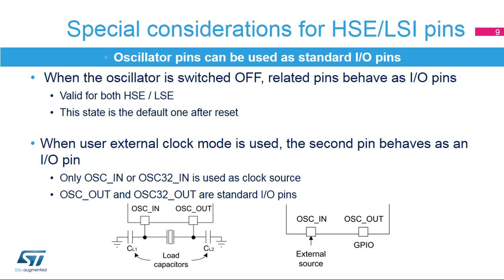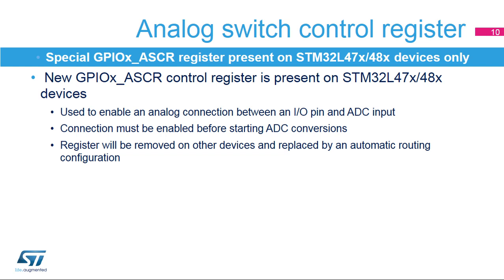This is the default state after device reset. When the external clock source is used instead of a crystal oscillator, only the related OSC-in or OSC-32-in pins are used for the clock, and OSC-out or OSC-32-out pins can be used as standard I/O pins. The new GPIOX ASCR control register has been introduced on STM32L47x/48x devices to control analog interconnection between an I/O pin and ADC input. This register must be configured before ADC conversions are started to correctly bring the signal to the ADC input. On other categories of STM32L4 devices, this register is removed and the analog interconnection is enabled automatically when an ADC channel is selected.